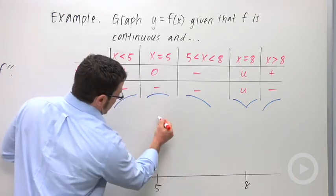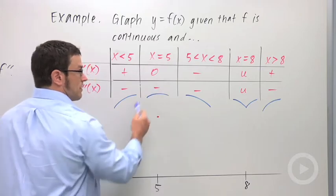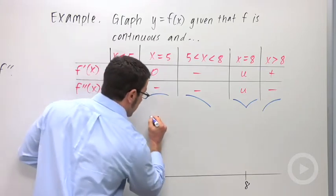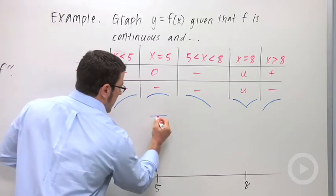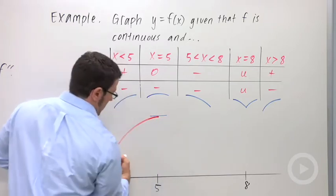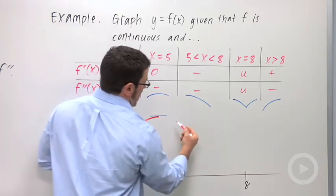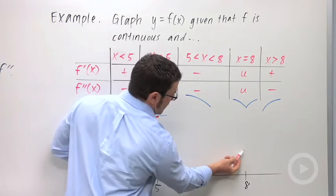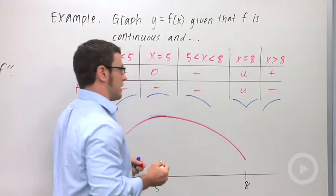But at x equals 5, I'm going to put my local maximum, keeping in mind that because the first derivative is 0, there's a horizontal tangent here. So I want to keep that in mind. But I want it to be increasing to the left and decreasing to the right. And I'm going to have it decrease and concave down all the way down to x equals 8.